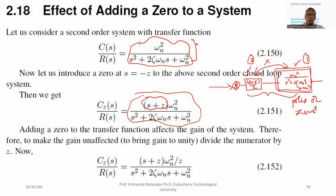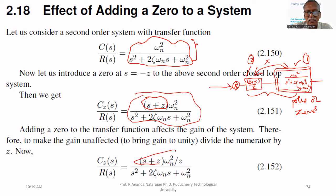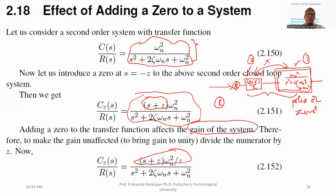The additional system is (S plus Z) divided by Z. Why divide by Z? If you simply add S plus Z, the static gain of the system will be affected. But I don't want to change any of its static gain — I want to simply add the zero only, so the effect of the zero alone must be present. That's why (S plus Z) divided by Z is added. If we divide by Z, there won't be any change in gain.